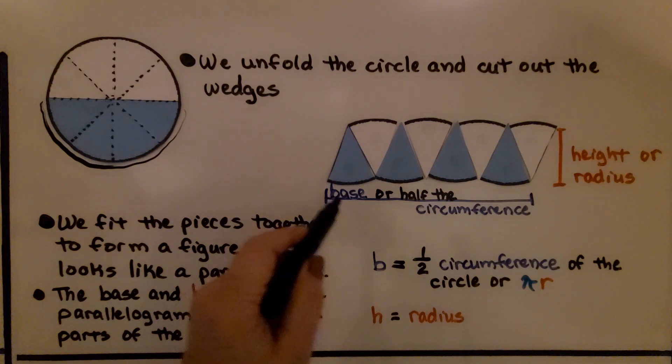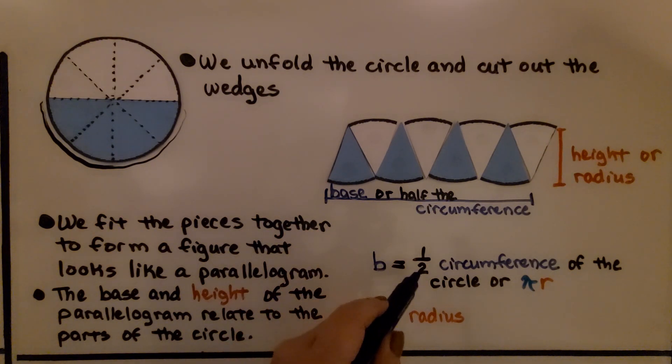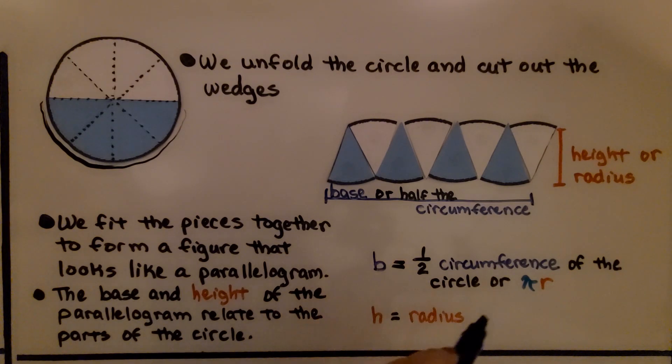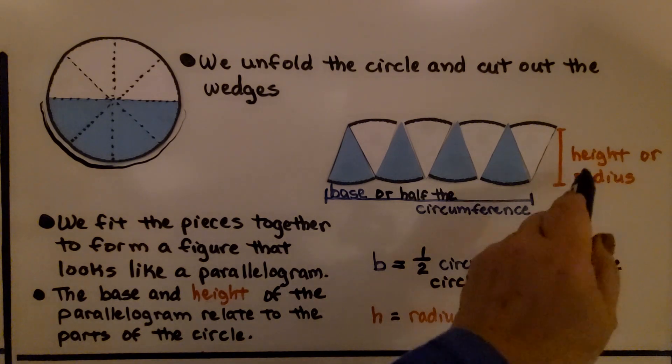So the base is equal to half the circumference of the circle, or it's pi times r, pi times the radius. And our height is equal to the radius.